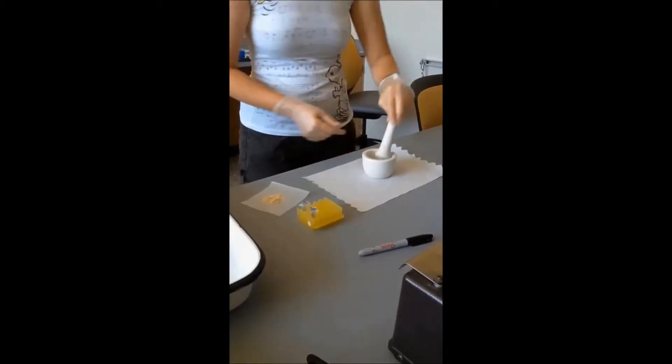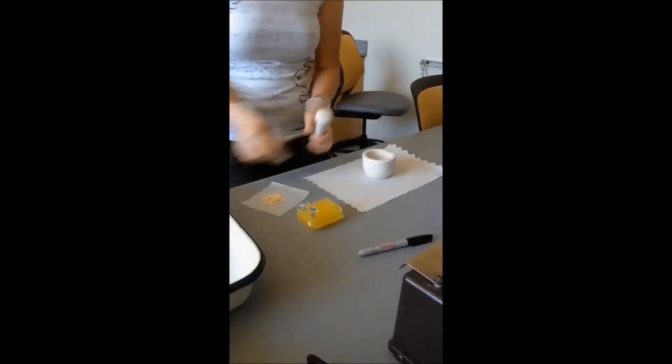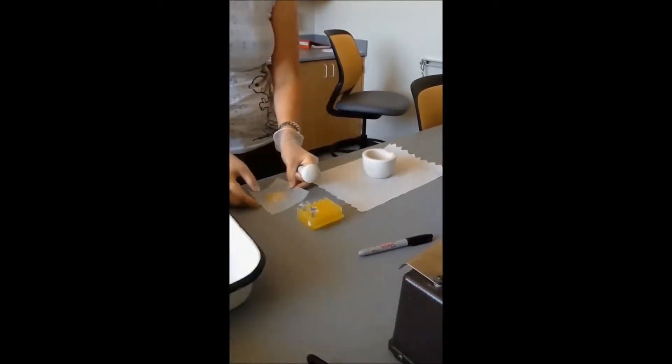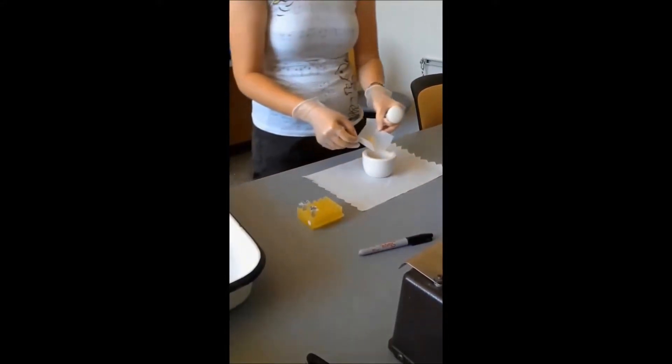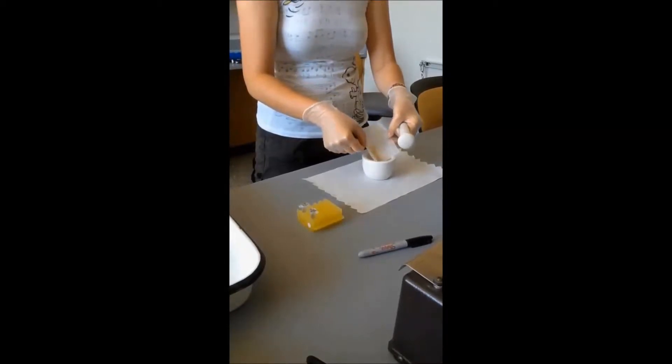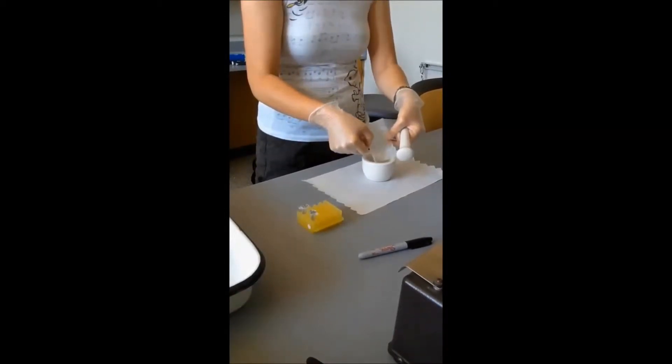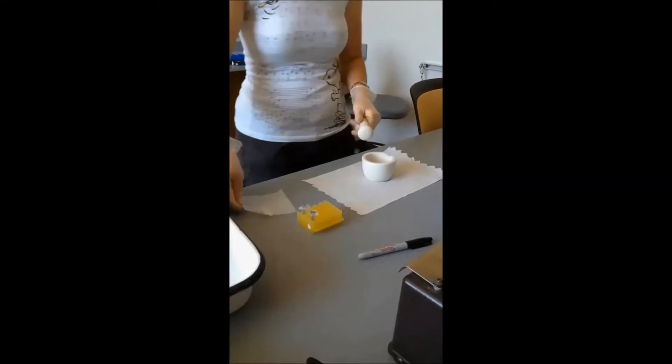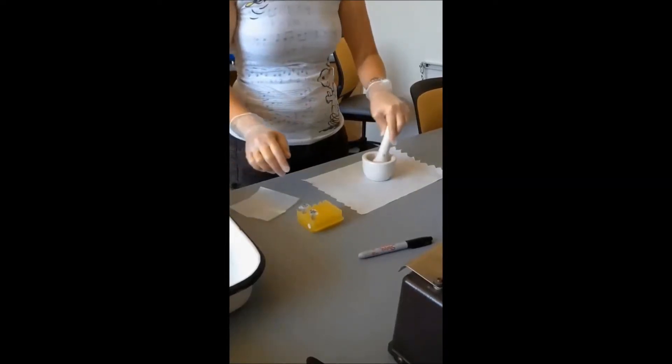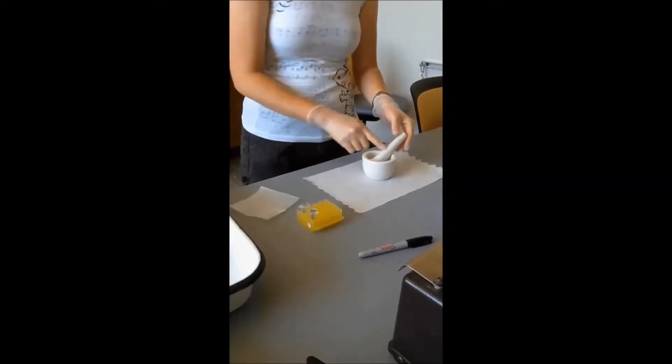So what we're going to do is we're going to take our whey paper that we had folded before we added the sample to it and just pour it carefully into our mortar and pestle. I'll put the pestle back into the mortar.